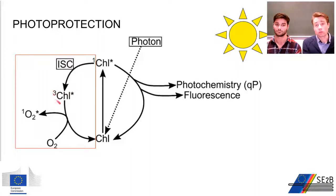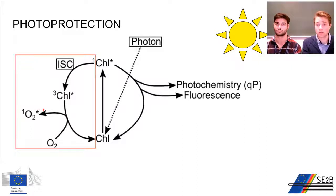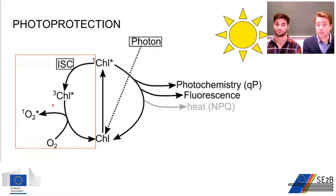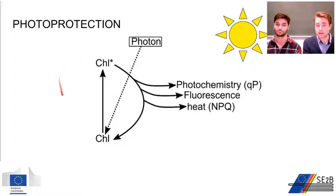These chlorophyll triplet states react with oxygen to form singlet oxygen, which is a very dangerous component because it is very damaging for the DNA and proteins — in the end your organism will die from this. Therefore, photosynthetic organisms have developed a sort of escape valve, also called non-photochemical quenching, which means that these reactive oxygen species are not produced.